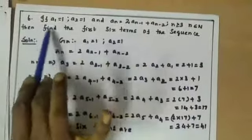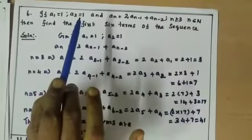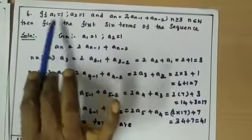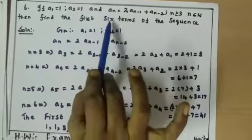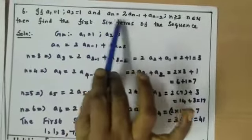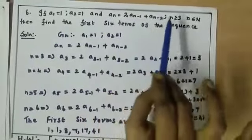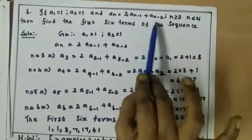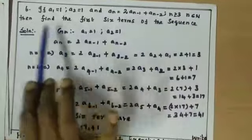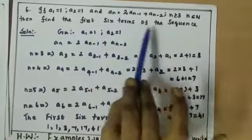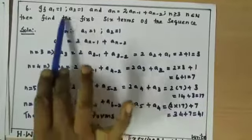Next: a1 = 1, a2 = 1, and an = 2·an-1 + an-2 for n greater than 3, where n belongs to natural numbers. Find the first 6 terms of the sequence.